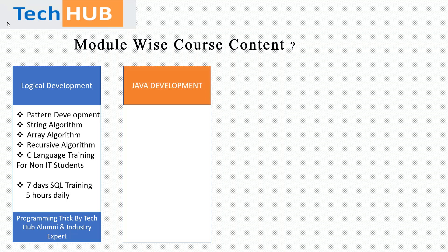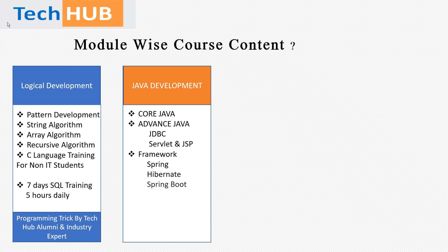We have one more module: Java Development. In this module we teach Core Java, with a syllabus designed as per Oracle certifications — specifically OCJA (Oracle Certified Java Associate) and OCPJP (Oracle Certified Professional Java Programmer). We cover the complete syllabus of both exams. We also teach Advanced Java including JDBC, Servlet, and JSP. In frameworks we cover Spring, Hibernate, Spring Boot, web services, and an introduction to microservices. This module also provides a complete guideline on how to crack Java interviews and focus on frameworks from an industry interview perspective, under the guidance of industry experts.